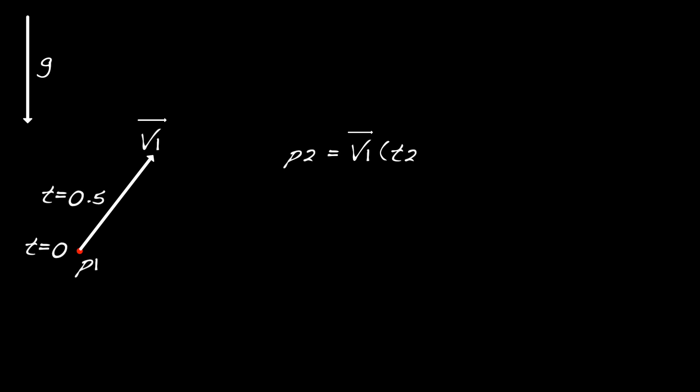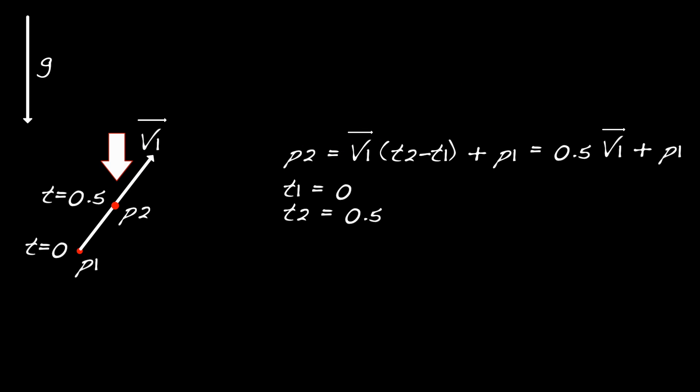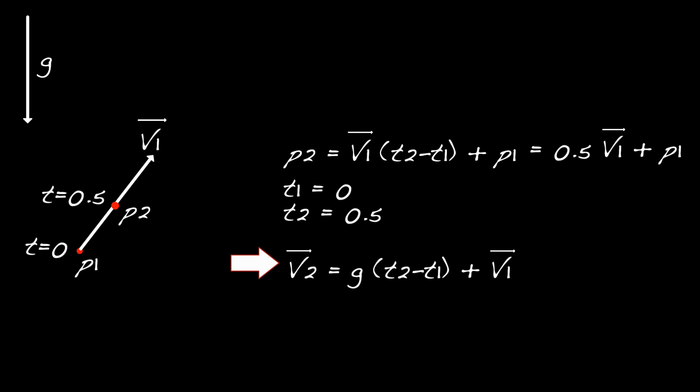Let's do an example. Suppose that at the start of the simulation, we set our time parameter t to 0. Our particle is at point p1 with velocity v1, and the gravity vector g points down. To figure out where the particle will be at time t equals 1/2, we use the equation p2 = v1 × (t2 − t1) + p1, where t1 = 0 and t2 = 1/2. So p2 = (1/2)v1 + p1, meaning that p2 is halfway between v1's tail and head. And to figure out v2, we use v2 = g × (t2 − t1) + v1. Here g is the gravitational vector, which points downward, and on Earth has a magnitude of 9.8 meters per second squared.